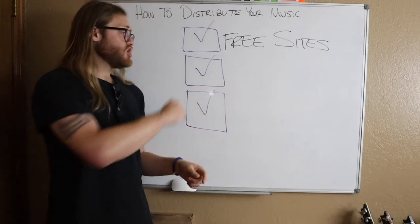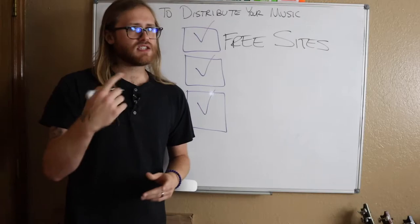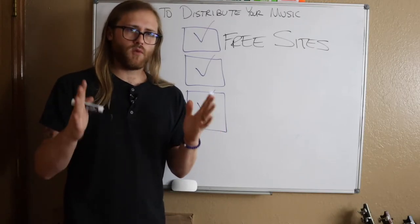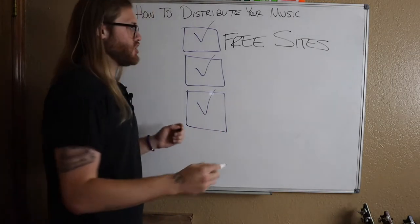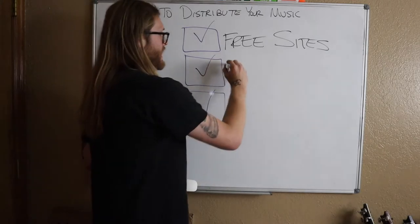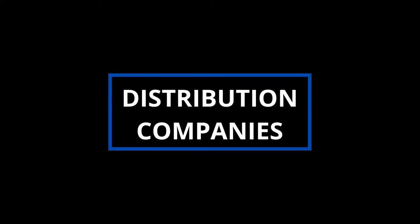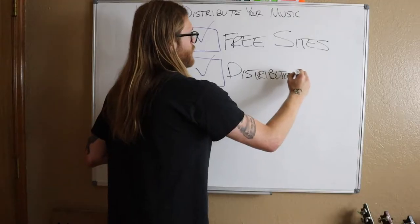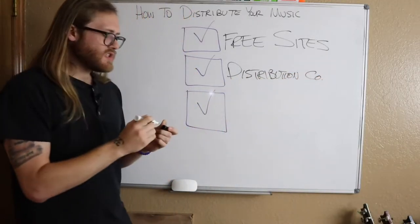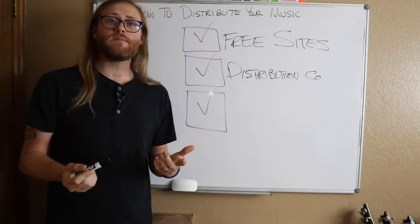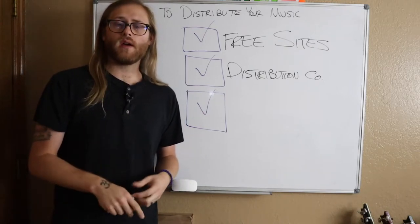The second thing you need to check off your list as you're distributing your music — and I'm sure most of you have heard of this — is to use a distribution company. These are companies like CD Baby, DistroKid, or TuneCore.